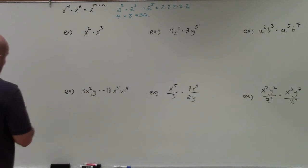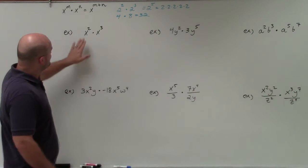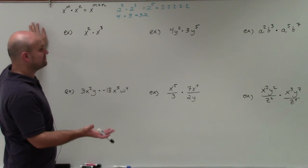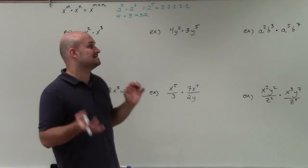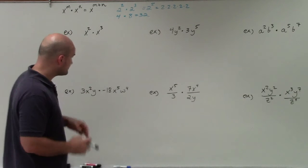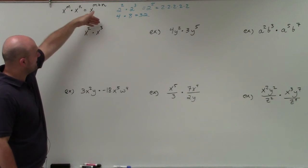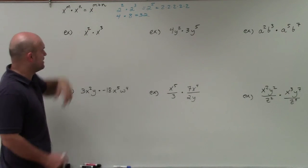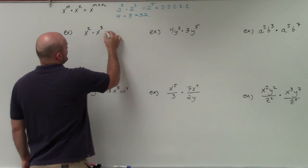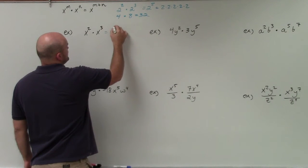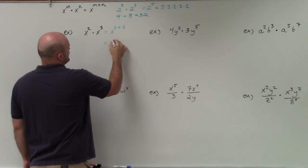All we're simply doing is adding the powers when we're working through these. In this first example, remember, that only works when the base is exactly the same. So here my bases are exactly the same, and I'm just going to add my powers. So x squared times x cubed is simply going to be x to the 2 plus 3, which equals x to the fifth.